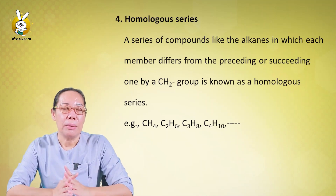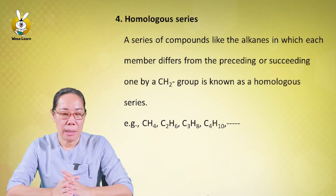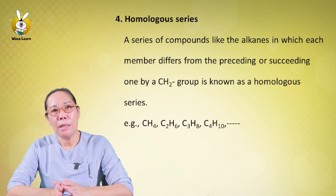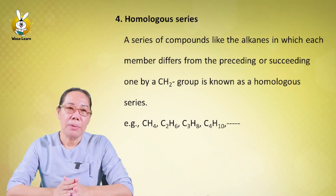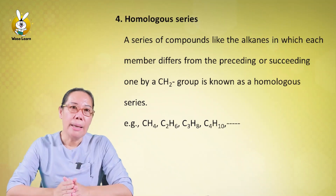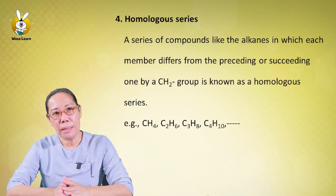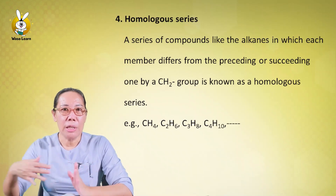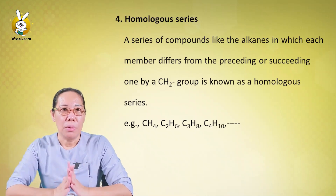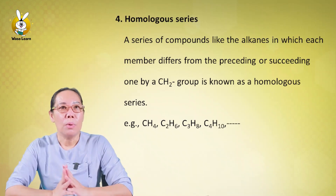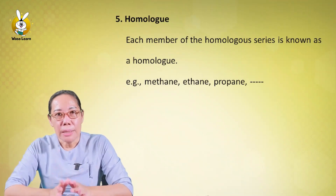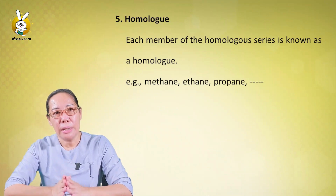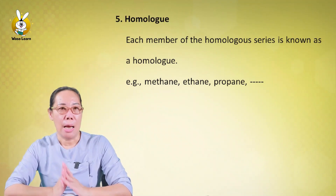In a homologous series, each member has one additional CH2 group. For example, the alkane homologous series consists of methane, ethane, propane, and butane, each differing by one CH2 unit.